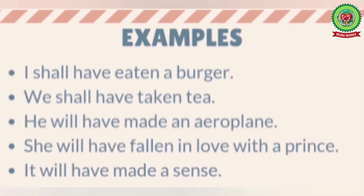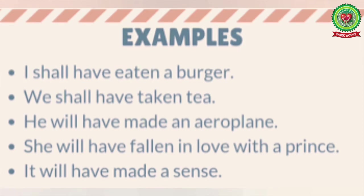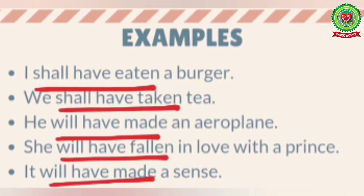Now we will find the future perfect tense from the given examples. First: 'I shall have eaten a burger.' Second: 'We shall have taken tea.' Third: 'He will have made an aeroplane.' Fourth: 'She will have fallen in love with the prince.' Fifth: 'It will have made sense.' The underlined future perfect forms are: shall have eaten, shall have taken, will have made, will have fallen, will have made.